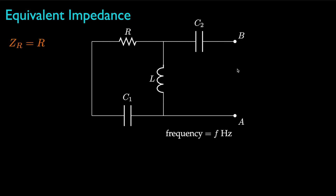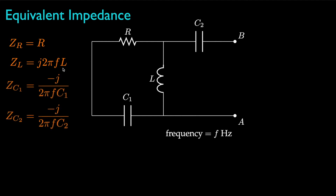Independent of the frequency, the impedance for the resistor is simply the resistance. The impedance for the inductor is the purely imaginary product of 2 times pi times the frequency times the value for the inductance, and the impedances for the capacitors are also purely imaginary with the value of negative 1 over 2 times pi times the frequency times the values for the capacitances.